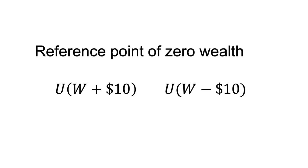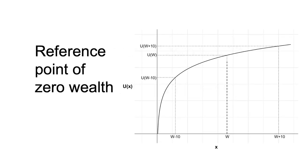Rather, the utility of each option is calculated as U of W plus $10 and U of W minus $10. The practical impact of this implementation is that people's choices may differ depending on their wealth. The same gamble may be accepted or rejected at different levels of wealth.